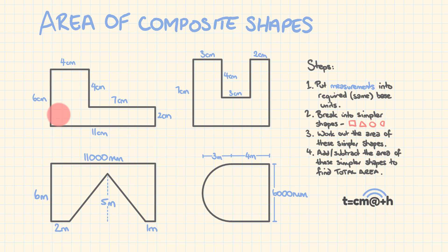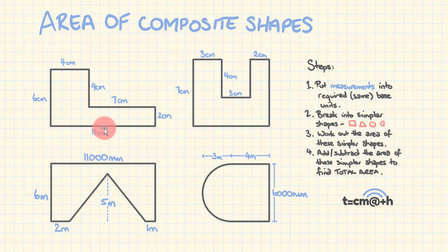G'day, welcome to Tech Math Channel, I'm Josh. What we're going to be having a look at in this video is how to work out the area of composite shapes — that is, the area within each of these shapes here. As you can see, they contain things like rectangles, as well as triangles, as well as circles. So I've got a whole variety of these here to show you.